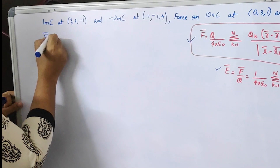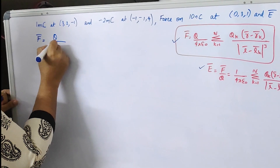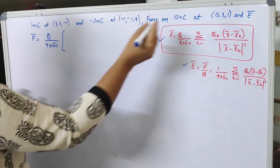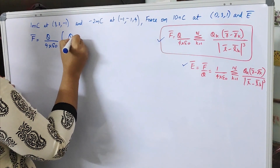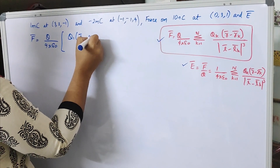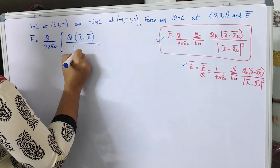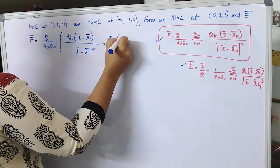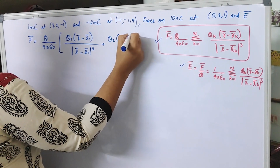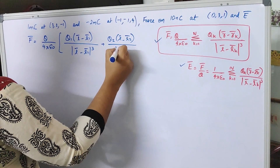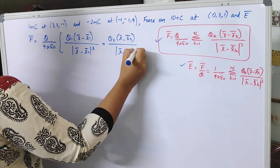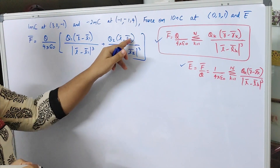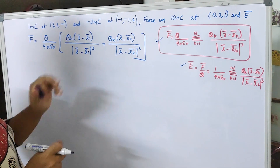We can modify it so that F equals q divided by 4 pi epsilon 0, into q1 times vector (r minus r1) divided by modulus of vector (r minus r1) the whole cube, plus q2 times vector (r minus r2) divided by modulus of vector (r minus r2) the whole cube. Here, vectors r, r1, and r2 are all position vectors.